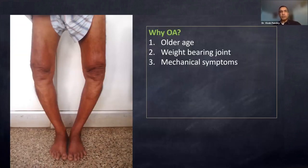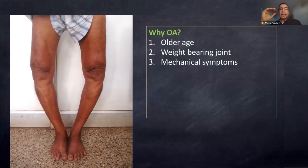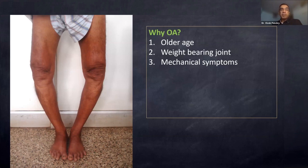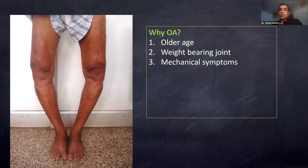Why osteoarthritis? When we use the word 'itis' in medical terms, you might think inflammation. But in primary osteoarthritis of any joint, it is not a grossly inflammatory arthritis like rheumatoid. There may be low-grade inflammation — that's why it is also called osteoarthrosis. Whether you call it osteoarthritis or osteoarthrosis, they are the same thing, and you will find 'osteoarthrosis' in MCQs.